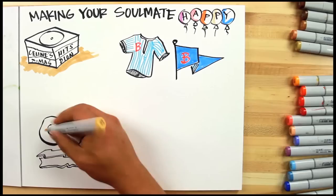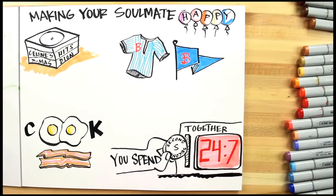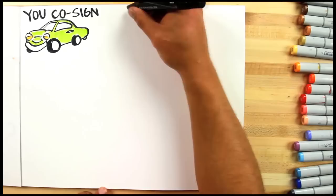You realize that you really want to learn how to cook and you spend every possible second together. Further, you co-sign on a car for them, you jump into a shared cell phone plan.